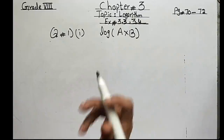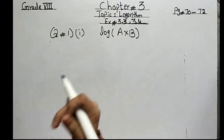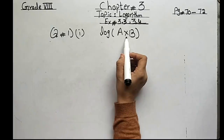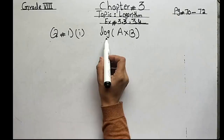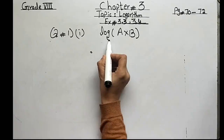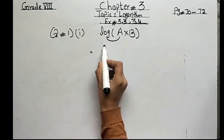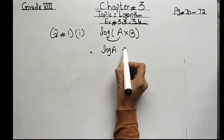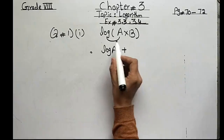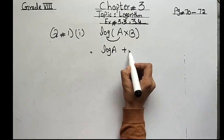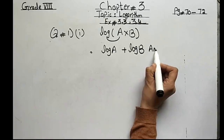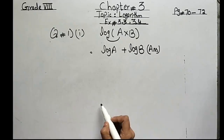As we have already discussed the laws of logarithm — when we apply the log on multiplication terms, the multiplication sign converts into the plus sign. So apply the log and open the bracket: log will apply first on A, giving log A, then multiplication converts to addition, then log applies on B, giving log B. This is your final answer.